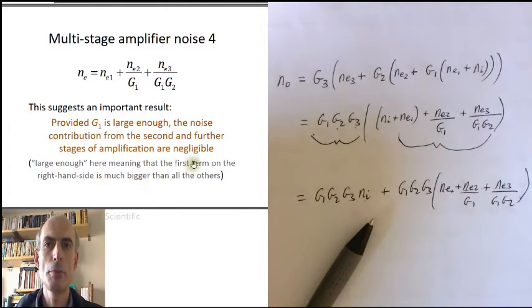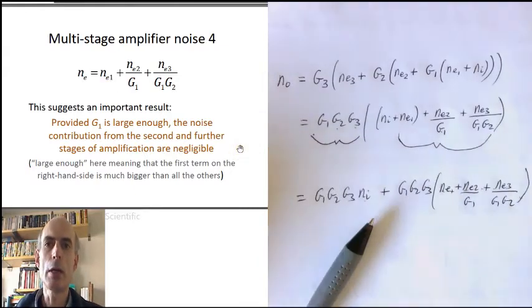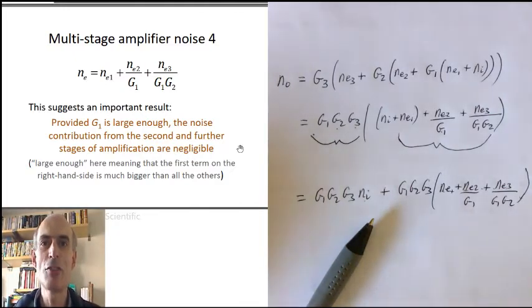This immediately suggests a very important result. Provided G1 is big enough, then the effect of the second and third and any subsequent stages is negligible. Almost all of the noise is going to come from the equivalent input noise of the very first stage. And that's why so much care and attention is placed on minimising the noise introduced by the first stage of amplification in any sensitive receiver.